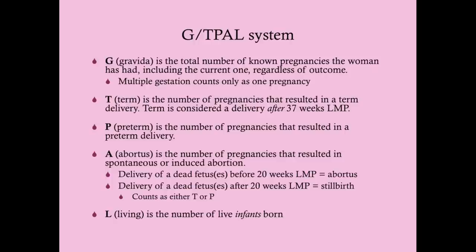Multiple gestations count as only one pregnancy for G. If she's only ever been pregnant once but had twins, she is still a G1. T stands for term — the number of pregnancies that resulted in a term delivery, defined as after 37 weeks LMP. P stands for preterm — the number of pregnancies resulting in a preterm delivery, generally considered anything between 20 and 37 weeks LMP.